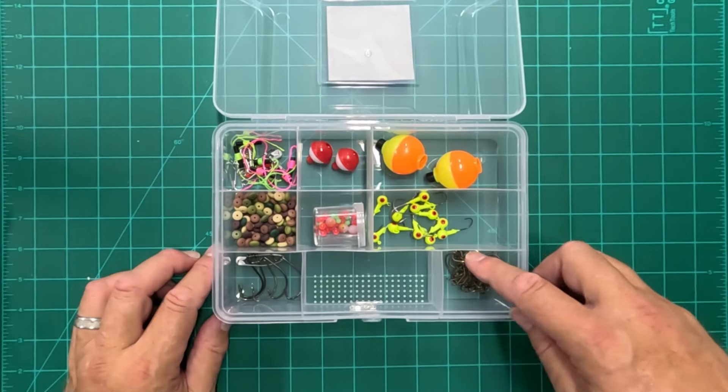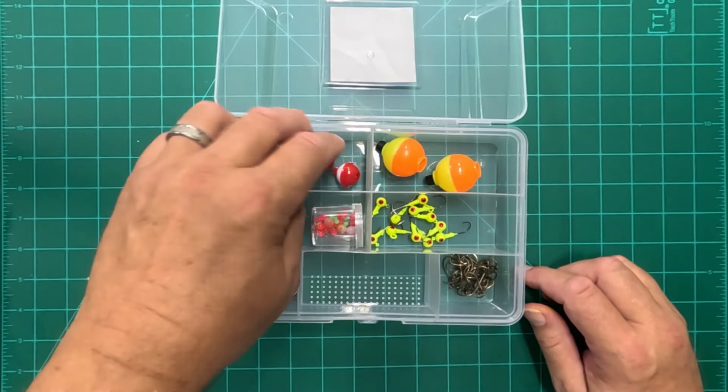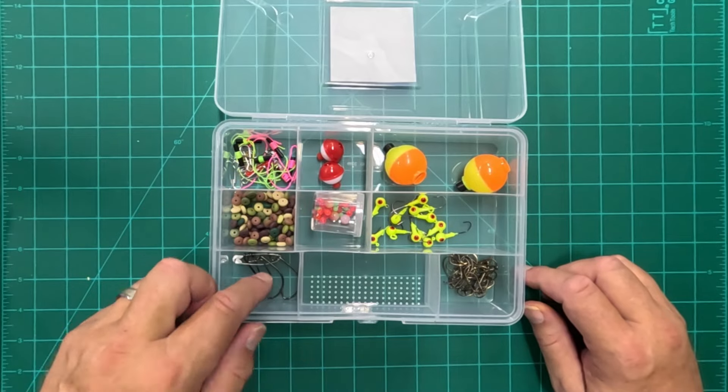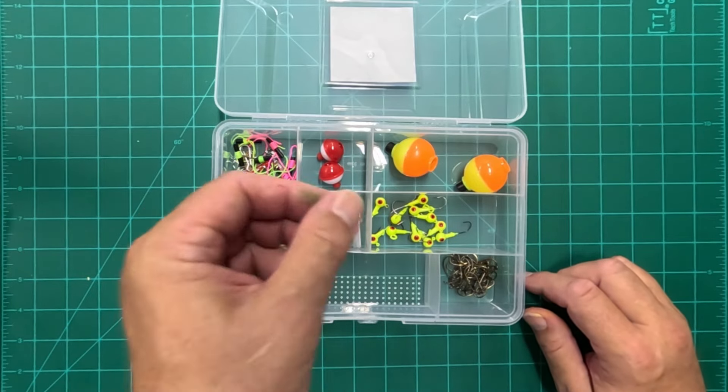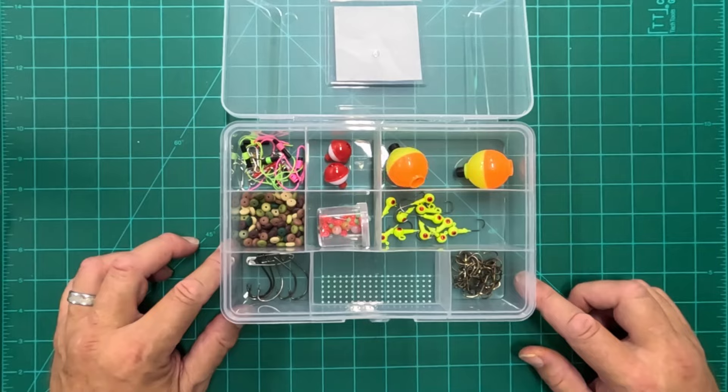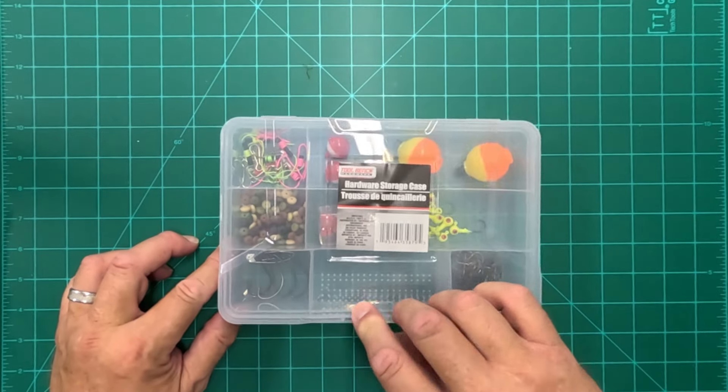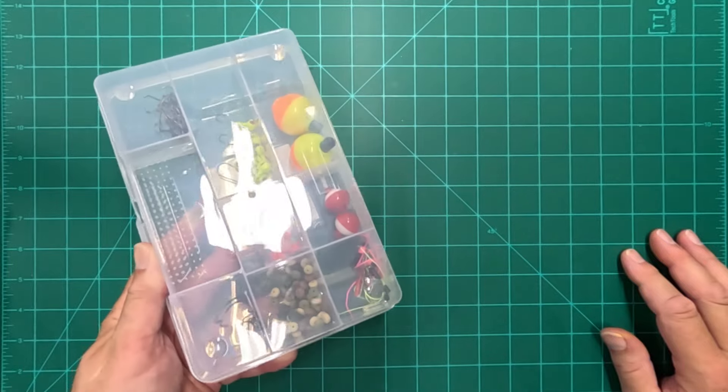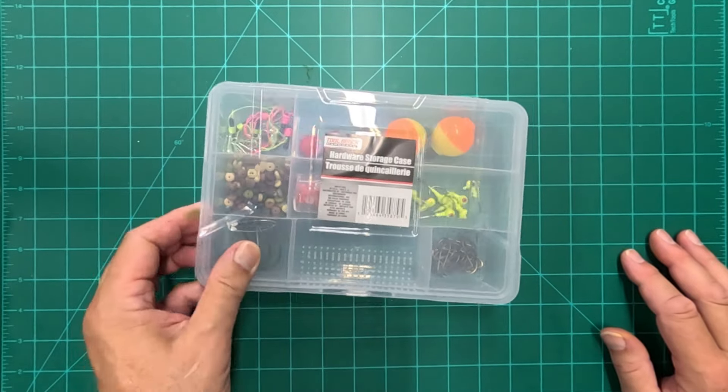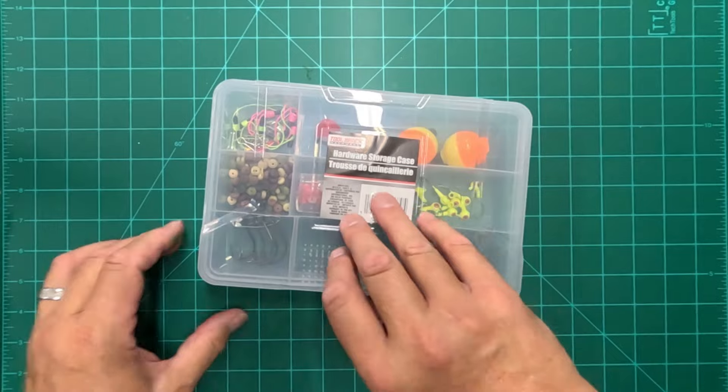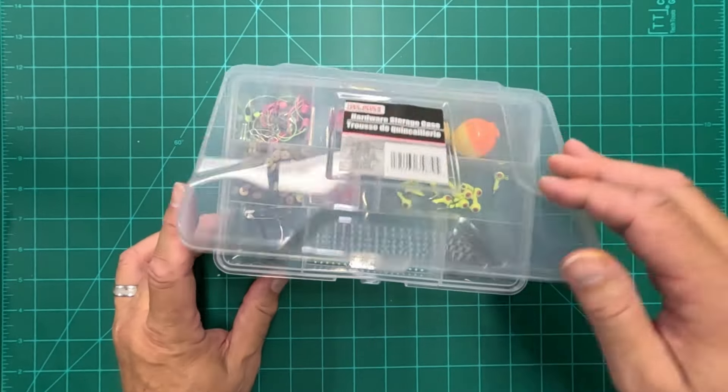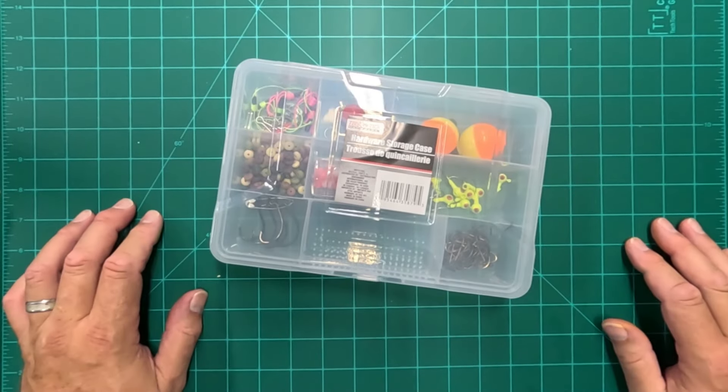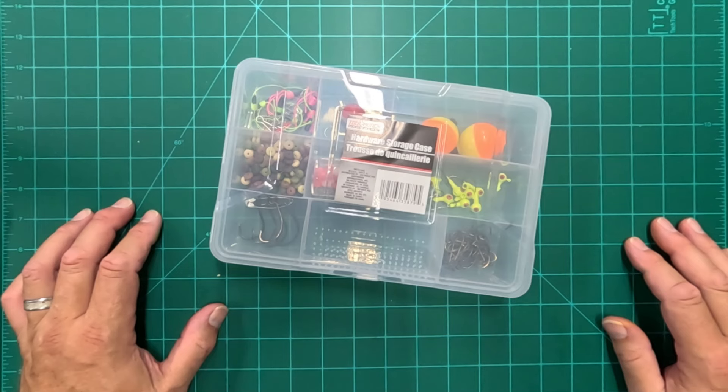You have room for things like hooks, beads, line stoppers, your bobbers, and even little storage containers. So you can put a good amount in this. It locks tight. It's called a hardware storage case. It's a little bit more substantial than some of the other cases, but it's still only $1.25 at the Dollar Tree, and I think that'll give me enough storage in my backpack tackle box.